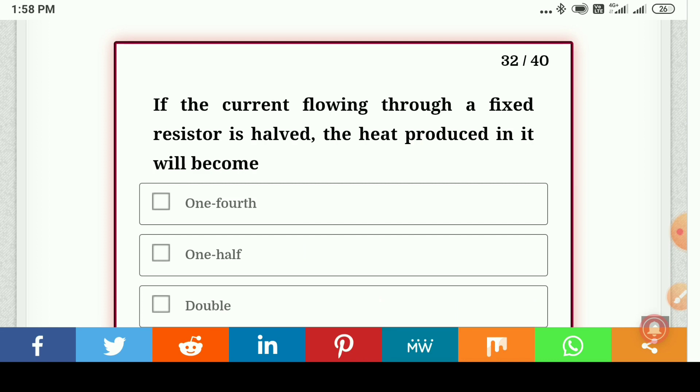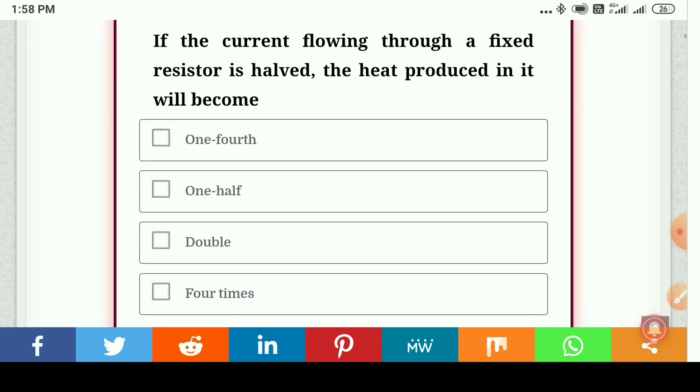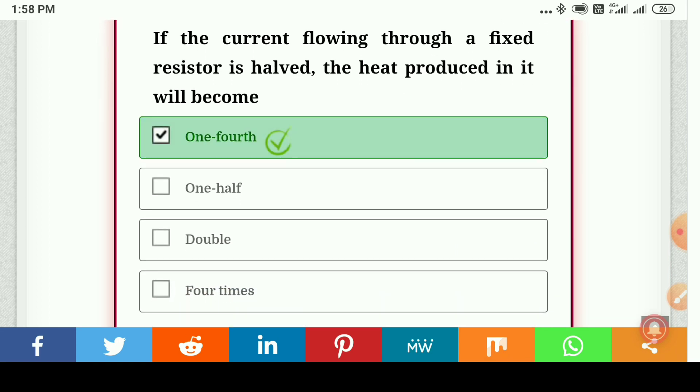If the current flowing through a fixed resistor is halved, the heat produced in it will become one-fourth, one-half, double, or four times. One-fourth.